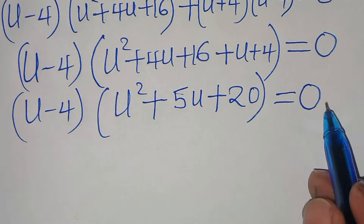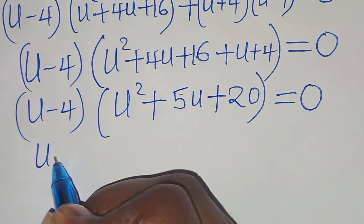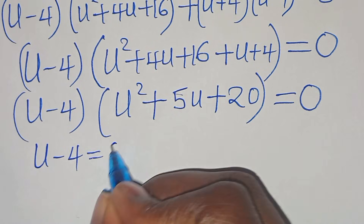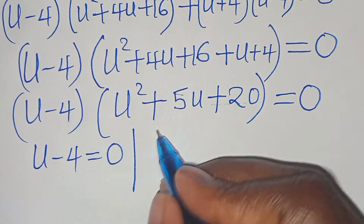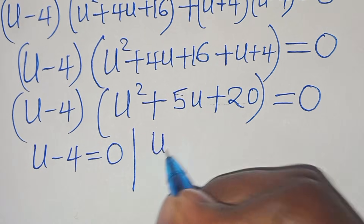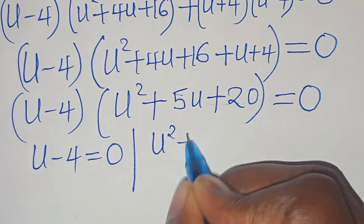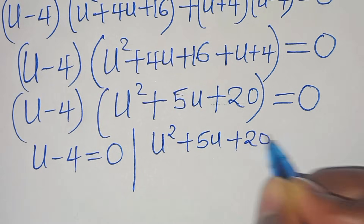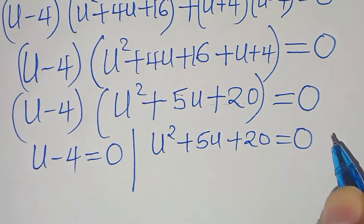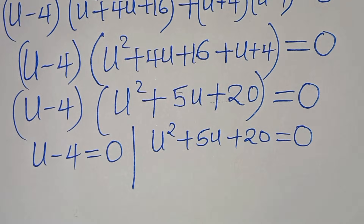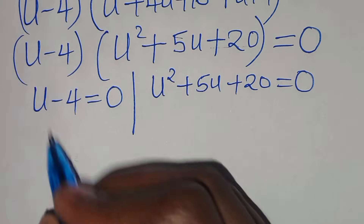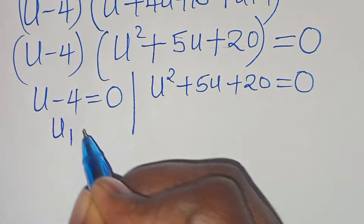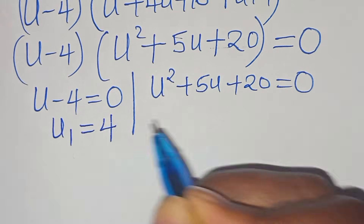We now have two parts: the first part gives u minus 4 equals 0, and the second part gives u² plus 5u plus 20 equals 0. From the first part, u₁ equals 4.